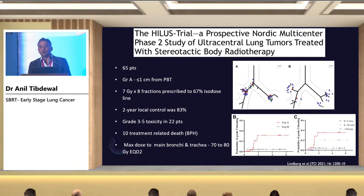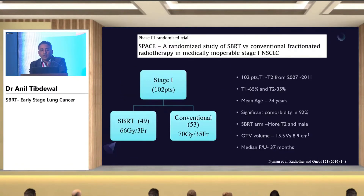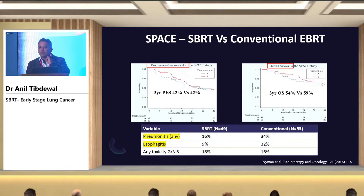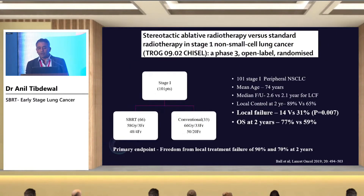Comparing SBRT with conventional radiotherapy: many Indian hospitals lack SBRT facilities and use cobalt machines or conventional fractionation. A randomized control trial comparing SBRT versus conventional fractionated radiotherapy found that 3-year overall survival and PFS were not significantly different, but pneumonitis and esophagitis rates were drastically reduced with SBRT. The CHISEL randomized trial also showed much less local failure and improved overall survival with SBRT compared to conventional fractionation.